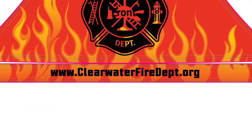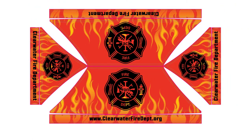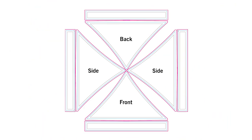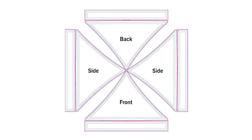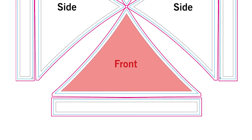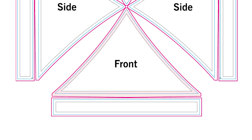For our all-over print option, you can design anywhere on the four peaks and the four valences of the canopy. This option gives you the most printable surface area and the most freedom with your design. When designing, keep in mind the template lines — you want to keep all text in the gray safety area, as well as any other important elements like logos or pictures.